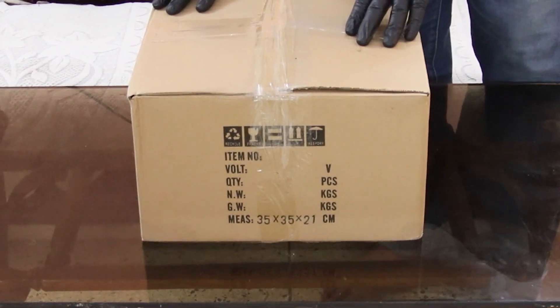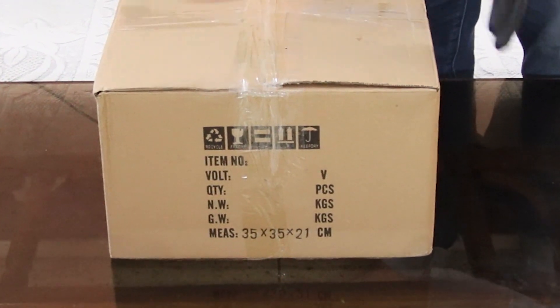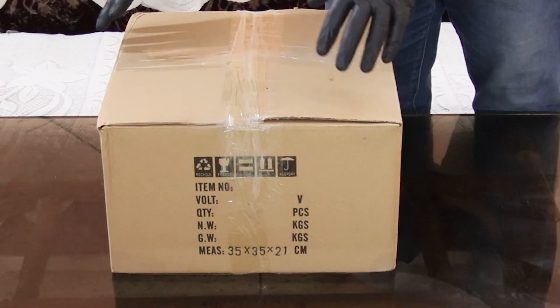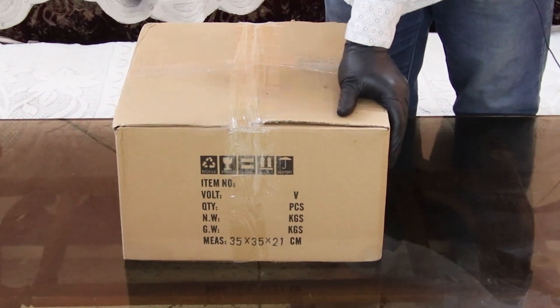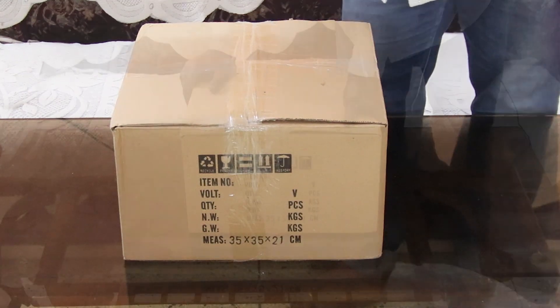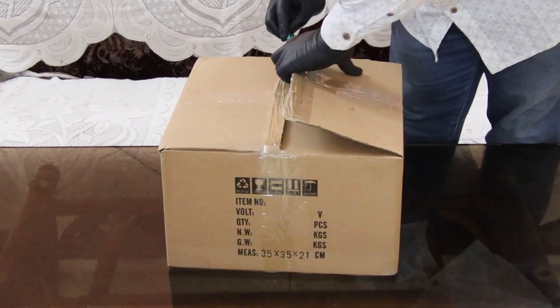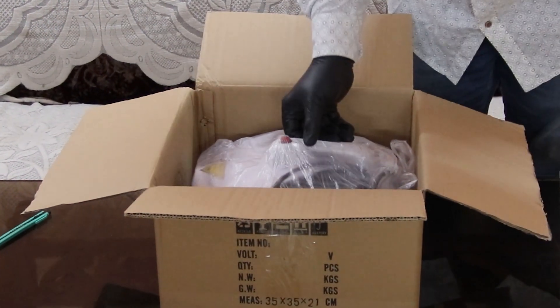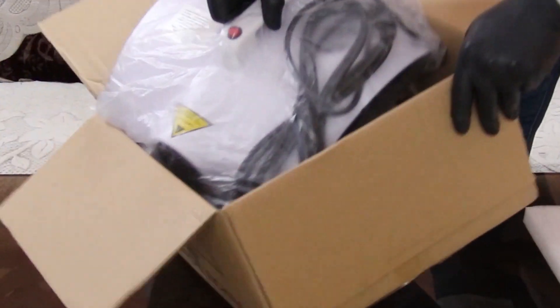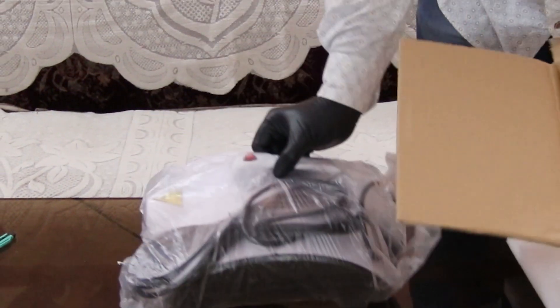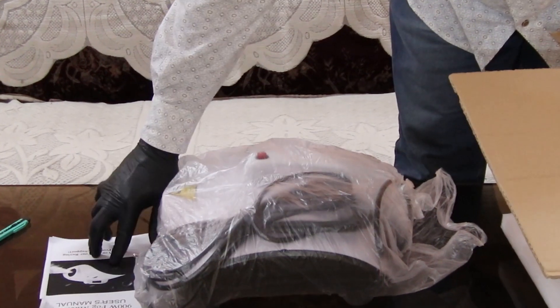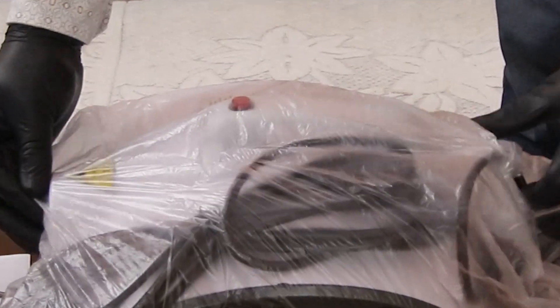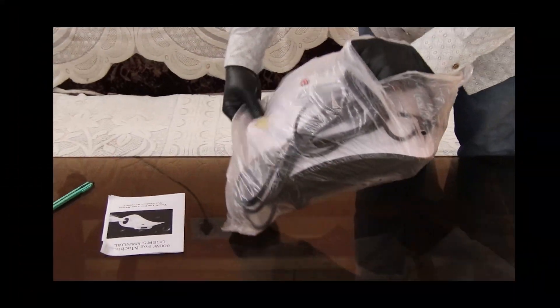Hello guys, welcome to the video. Today we are going to unbox an atomizer fogger machine which is nowadays also named as disinfection sterilization fogger. So now let me unbox it for you. This is a PU packaging. Inside the box this is the machine that we get, and we get the user manual with it. Let me just open this.